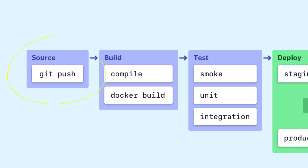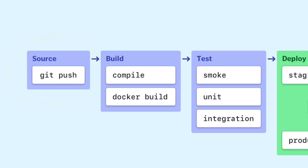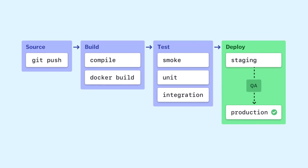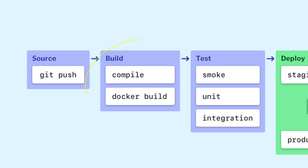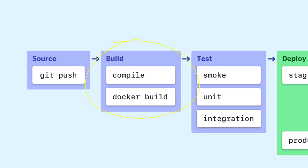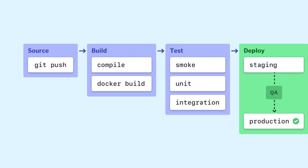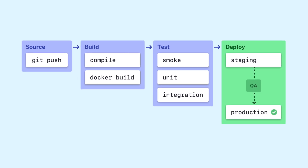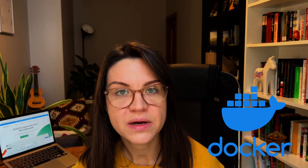On the source stage, a pipeline is triggered by a source code repository. A change in code triggers a notification to the CI/CD tool, which runs the corresponding pipeline. On the build stage, we combine the source code and its dependencies to build a runnable instance of our product that we can potentially ship to our end users. No matter what language you write your program in, cloud-native software is typically deployed in Docker, so this stage of the CI/CD pipeline builds a Docker container.